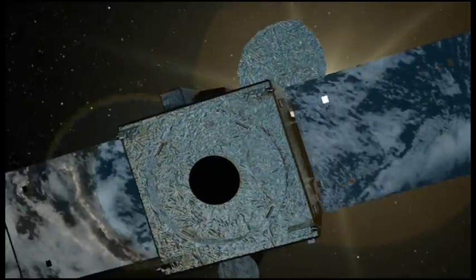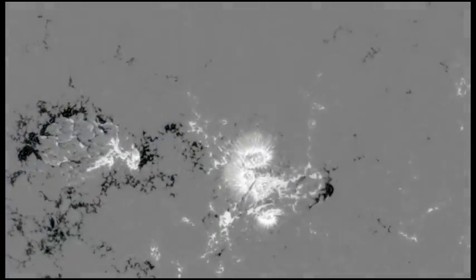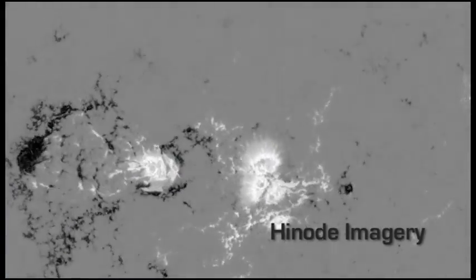400 years later, astronomers with increasingly complex satellite imagers investigate the origins and effects of the sunspots Galileo first observed. There must be something in a sunspot that opens up a wealth of knowledge and even more questions.